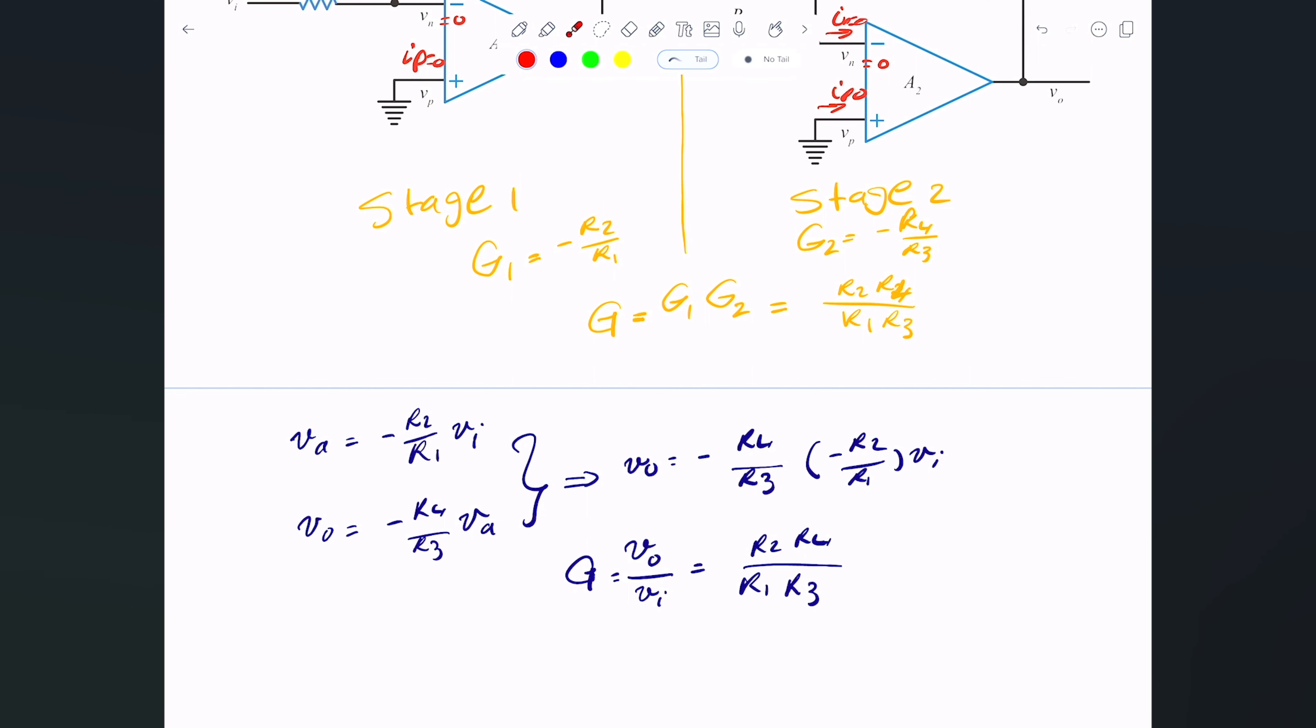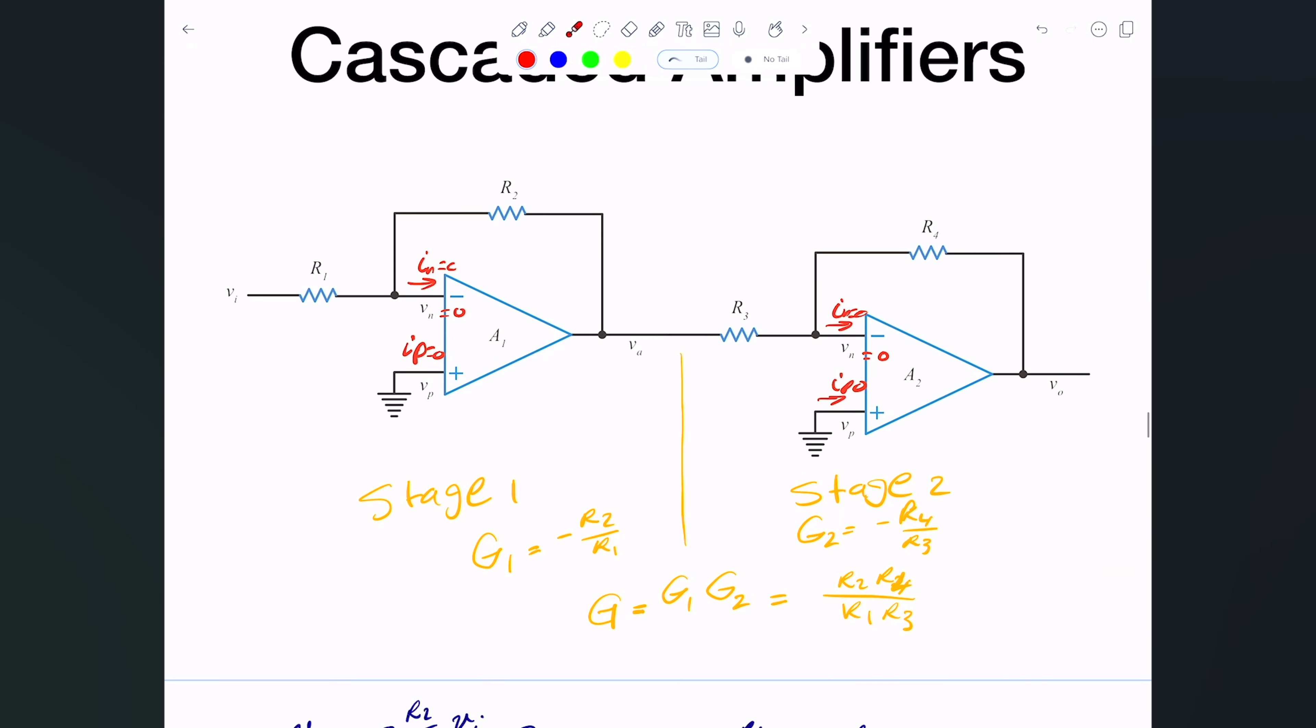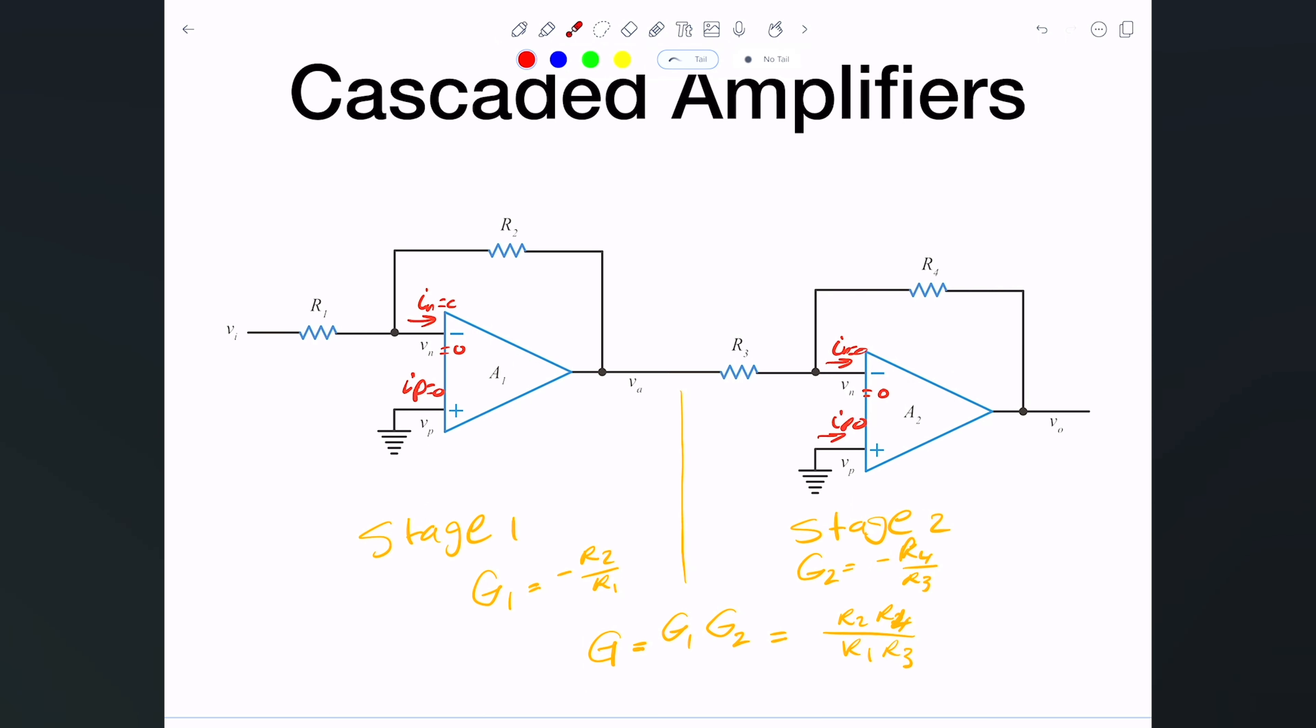And again, in here I'm assuming just ideal cases. But in general, if I have more stages, for example five or four, all you have to do is just take the gain of the first stage times the second stage, the third stage, and fourth, and so forth. And again, they don't have to be of the same configuration. So if the second configuration happened to be in a non-inverting case, you just basically tell me that would have been R4 divided by R3 plus one, and just multiply it that way.